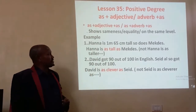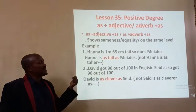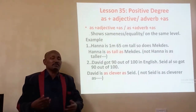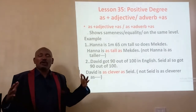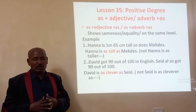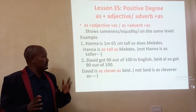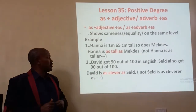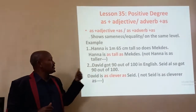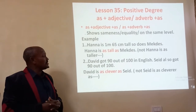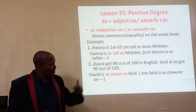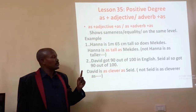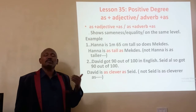Let me come back to this example: Hannah is 1.65 cm tall, and so is Megadeth. So I can make this sentence: Hannah is as tall as Megadeth. The two persons are at the same height. A second example: David got 90 out of 100 in English, and Said also got 90 out of 100. So David is as clever as Said, or Said is as clever as David — as plus an adjective plus as. This is positive degree.